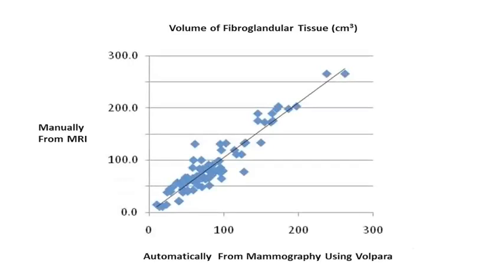Volpara was validated in several different ways. We have no absolute ground truth for breast density, so we have to compare the measurement of breast density with Volpara to other approaches, one of which was breast MRI. In breast MRI we can make images of the fat content and the water content of the breast; the water content is similar to what we think of as dense tissue in a mammogram.